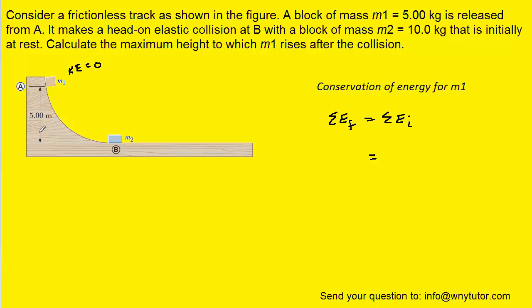But because the block is situated five meters off of ground level, it's going to have gravitational potential energy. And the formula for gravitational potential energy would be the mass of the object times g times its initial height.